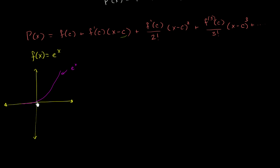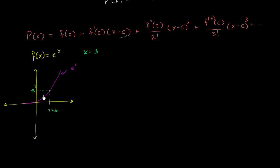I want to do it not around x is equal to 0. I want to do it around x is equal to 3, just to pick another arbitrary value. So we're going to do it around x is equal to 3. This is x is equal to 3, and that right there is f of 3. f of 3 is e to the third power, so this is e to the third power right over there.